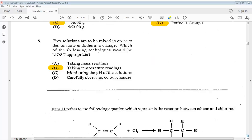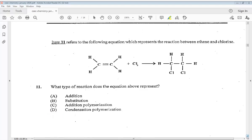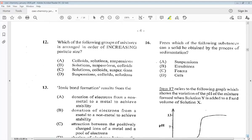Let's go on to number 11. Item 11 refers to the following equation, which represents the reaction between ethene and chlorine. So what type of reaction does the equation above represent? A. Addition, B. Substitution, C. Addition Polymerization, D. Condensation Polymerization. So the answer is A. Addition. 12. Which of the following groups of mixtures is arranged in order of increasing particle size? A. Colloids Solutions Suspensions, B. Solutions Suspensions Colloids, C. Solutions Colloids Suspensions, D. Suspensions Colloids Solutions. So the answer is C. Solutions Colloids Suspensions.